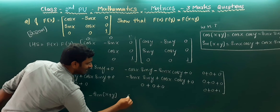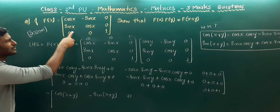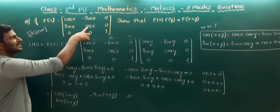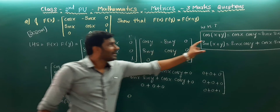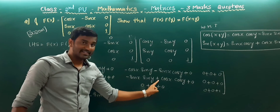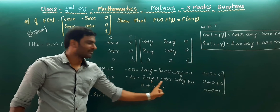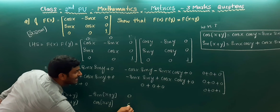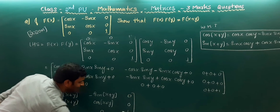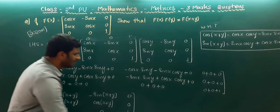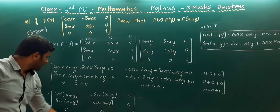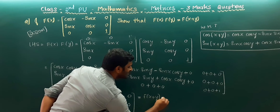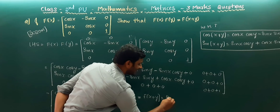The last element in the first row is completely zero. The first element of the second row gives sin(x+y). The second element of the second row: cos x cos y - sin x sin y, which is cos(x+y). The last element is zero, zero, 1. So the result is in the form of f(x+y). Hence the left hand side equals the right hand side.